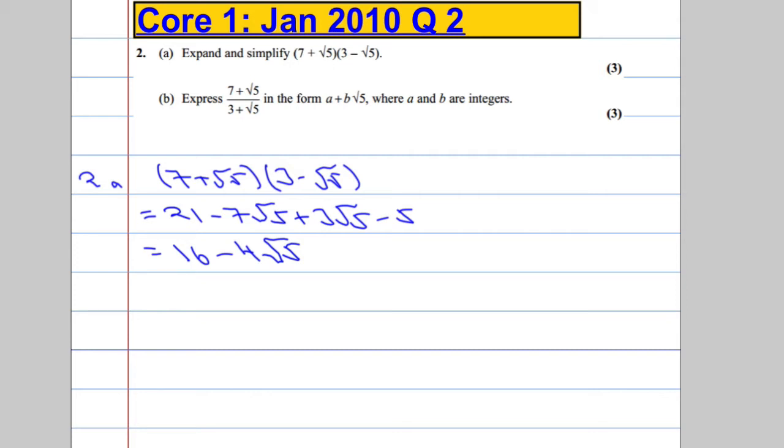Part B, we're asked to express 7 plus root 5 over 3 plus root 5 in the form A plus B root 5, where A and B are integers. So basically, I've got to have it in this form, where A and B are just numbers. So essentially, what we're going to have to do here is rationalize the denominator. Now, how are we going to do that?